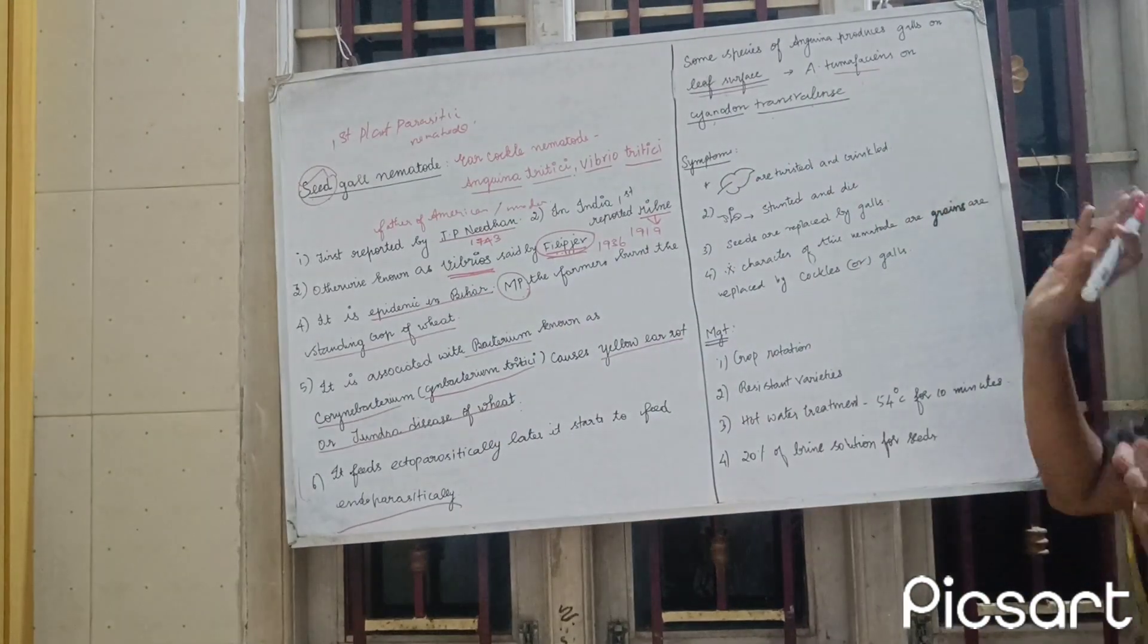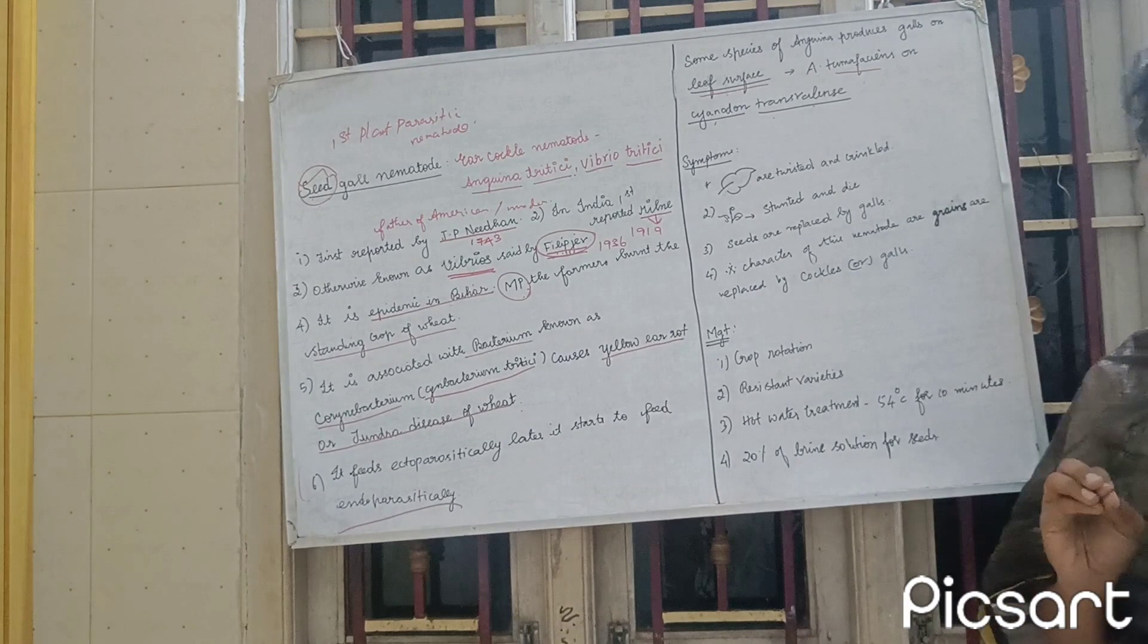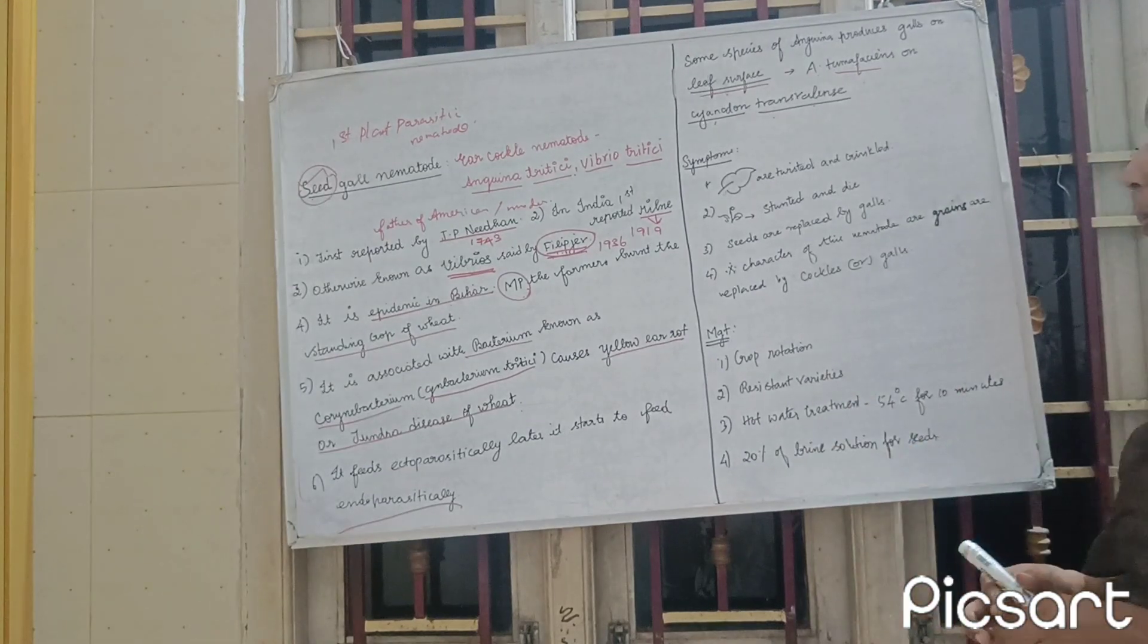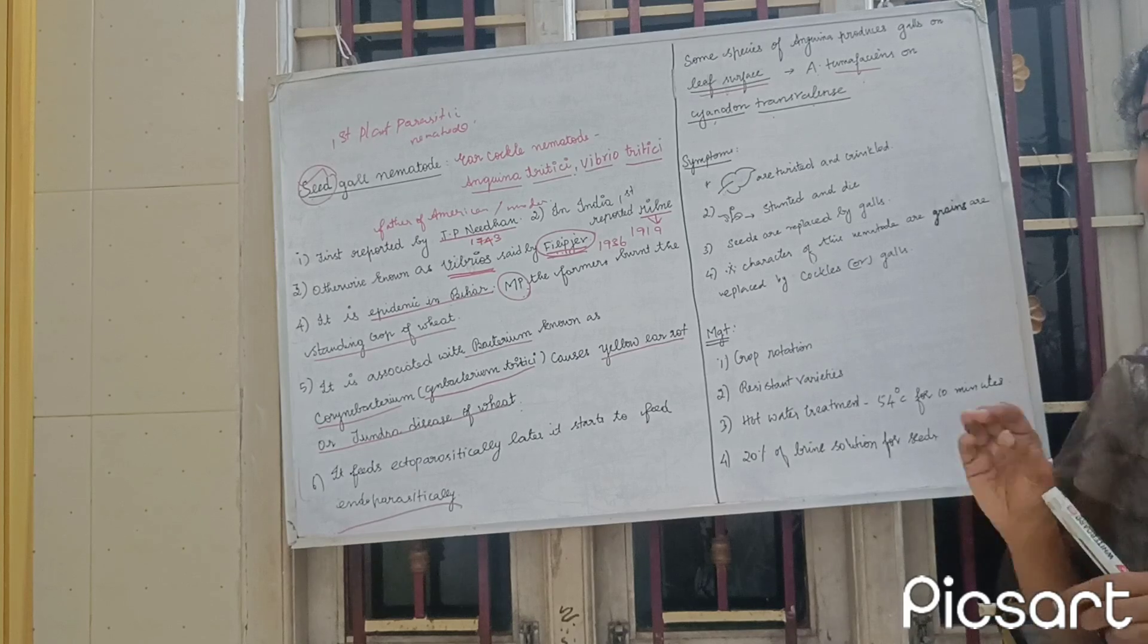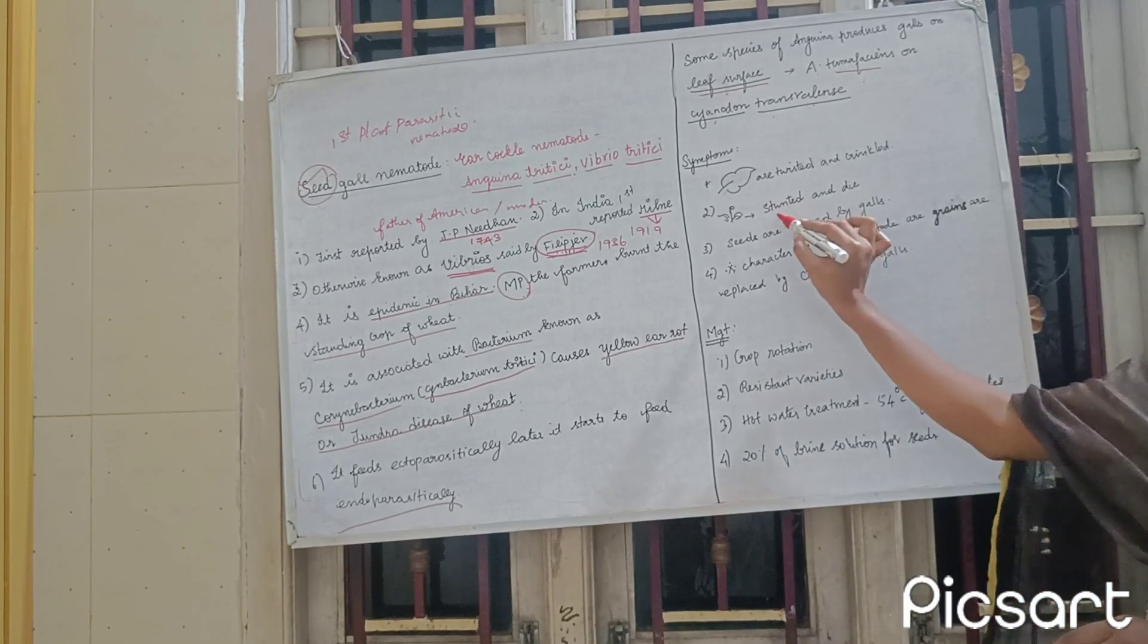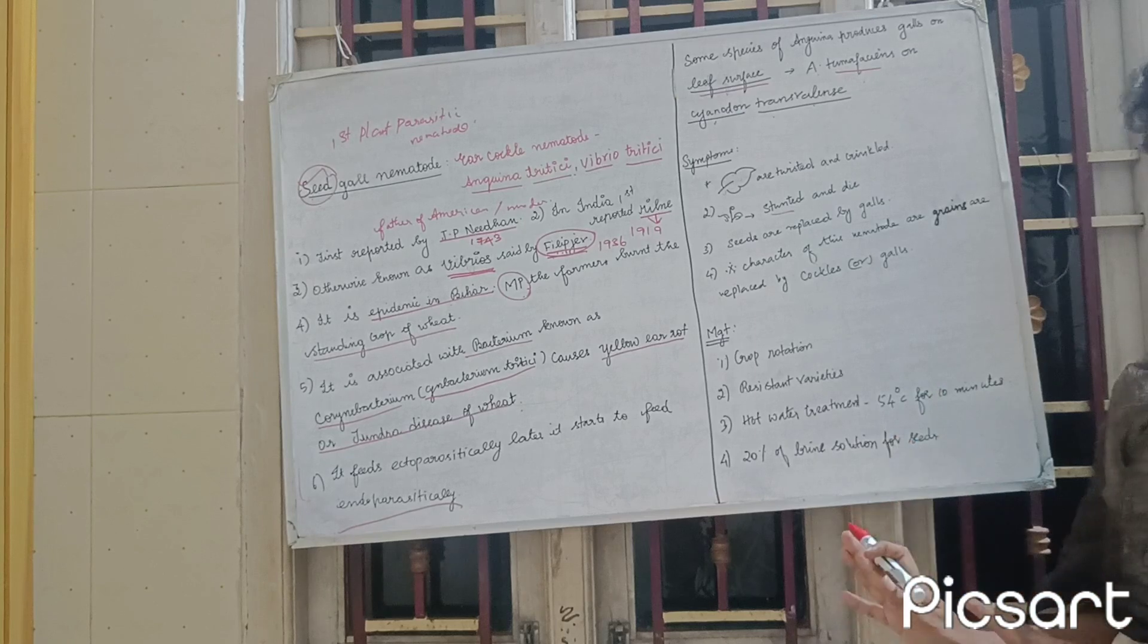Next, this is the seed gall method. These are the symptoms - seed gall method, how are the symptoms? The leaves, twists and wrinkles, there are many seedlings. What are the symptoms? Stunting.